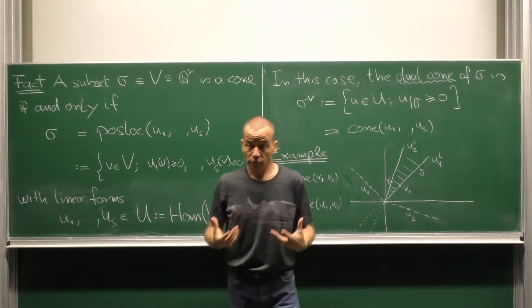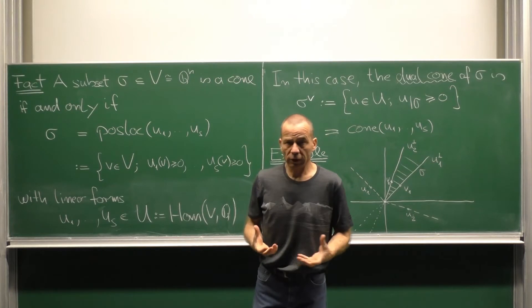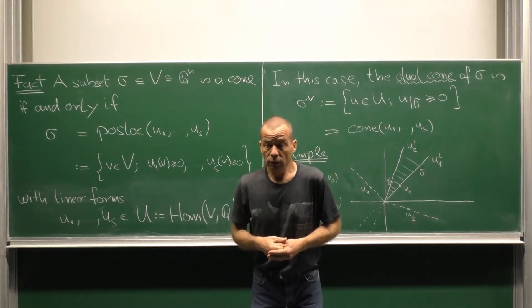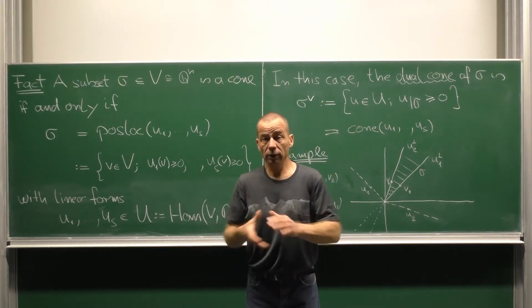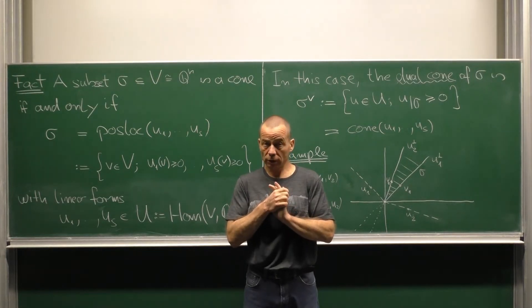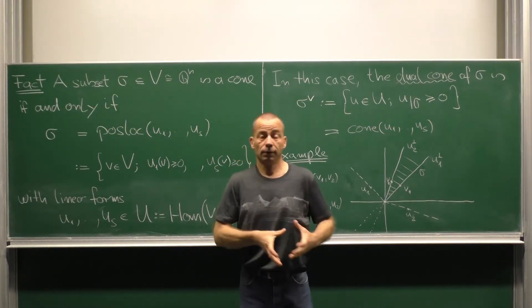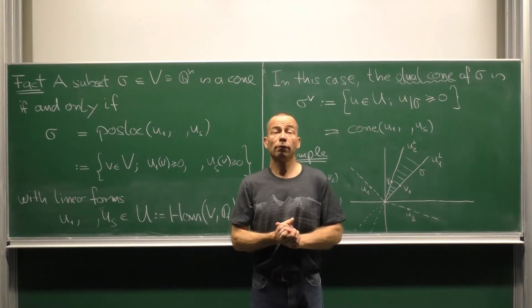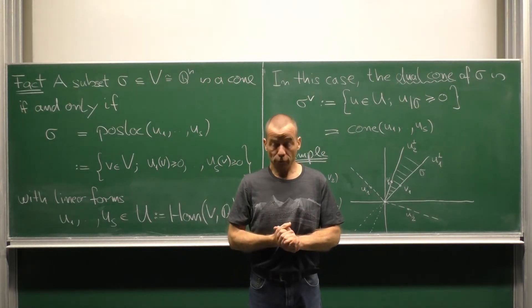So we have two possible ways to characterize our cones. The one is sigma is generated by finitely many vectors. The other is sigma is described by finitely many linear forms.